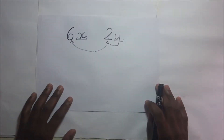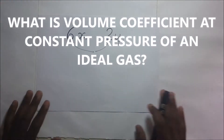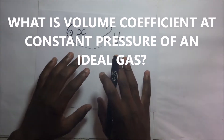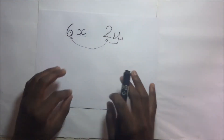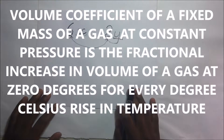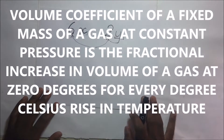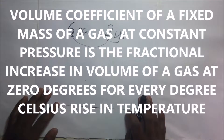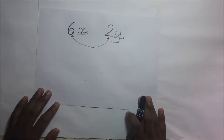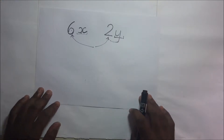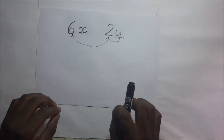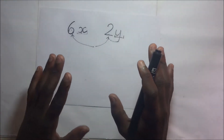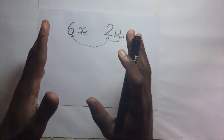What exactly is volume coefficient at constant pressure? The volume coefficient of a fixed mass of a gas at constant pressure is the fractional increase in the volume of a gas at zero degrees Celsius per Kelvin rise in temperature. I just don't want you to cram this — I want you to be able to see it. So allow me to use an illustration to help you understand what I mean by volume coefficient.